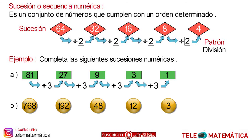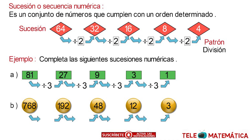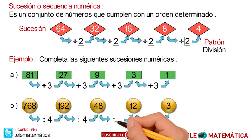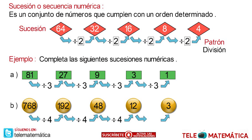We have the succession composed of the numbers 768, 192, 48, 12, and 3 respectively, and we must find the pattern used. The number that divides 768 to give 192 is 4. The number that divides 192 to give 48 is 4. The number that divides 48 to give 12 is 4. And the number that divides 12 to give 3 is 4.